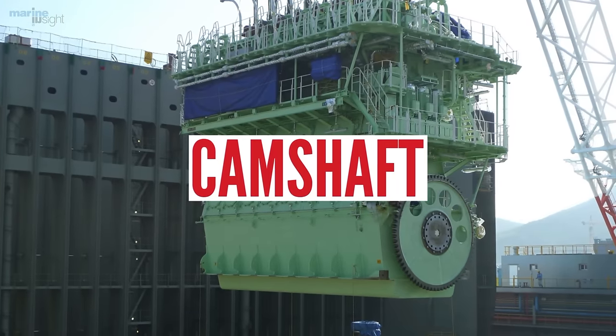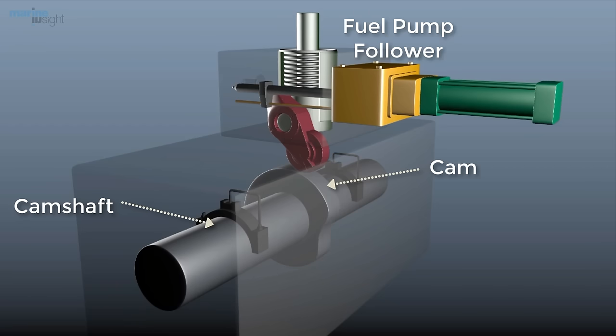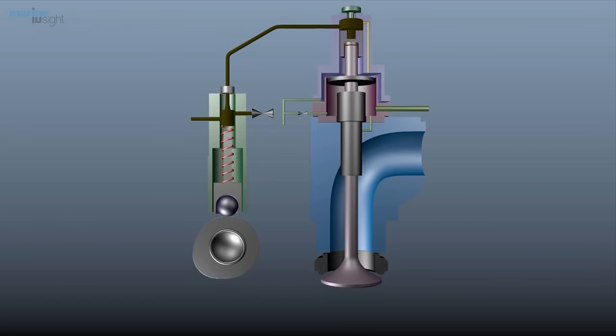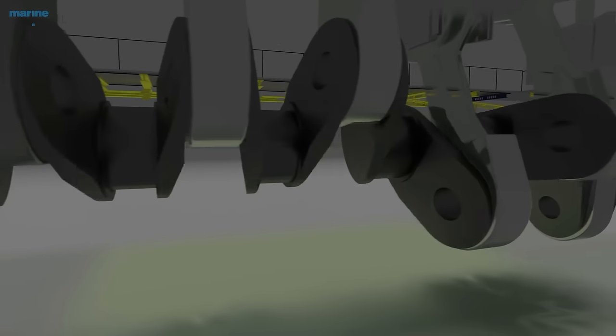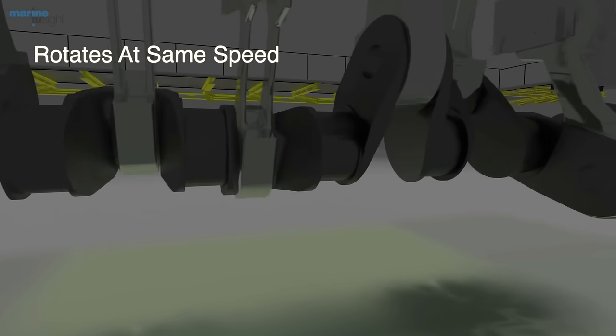Camshaft: The camshaft carries the cams which operate the fuel pumps and exhaust valves. Because these operate once every cycle of the engine, the camshaft on a two-stroke engine rotates at the same speed as the crankshaft.